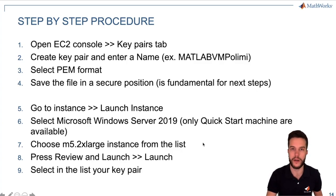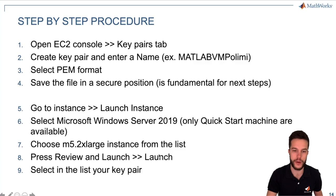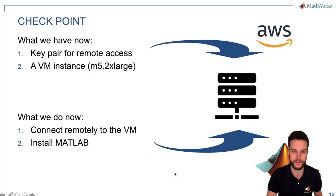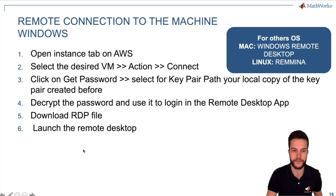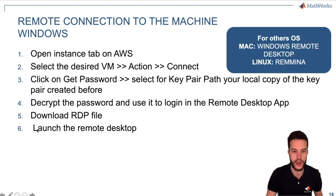Let's see a quick recap on what we have done. We selected the EC2 console, we created the key, we launched the instance of a Microsoft Windows Server with M5 2xlarge, and we started up the machine. Now we have the key pair and the virtual machine instance, and we want to connect to the virtual machine and install MATLAB. The last steps are: open the instance on AWS, select machine, click Connect, decrypt your password with the key pair, and launch the remote desktop.